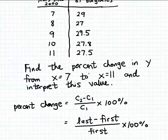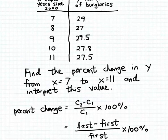Let's calculate the percent change in this problem. First we want to find the first value, which is the Y value corresponding to X equals 7. Then we want to find the last value, the Y value corresponding to X equals 11. From the table, our first value is 29 and our last value is 27.5.